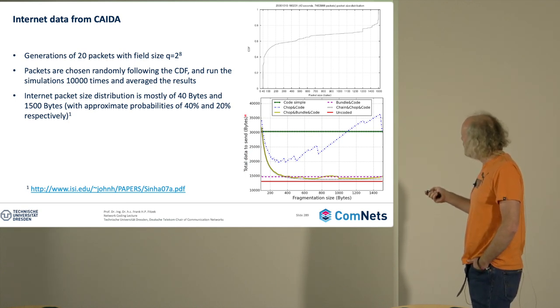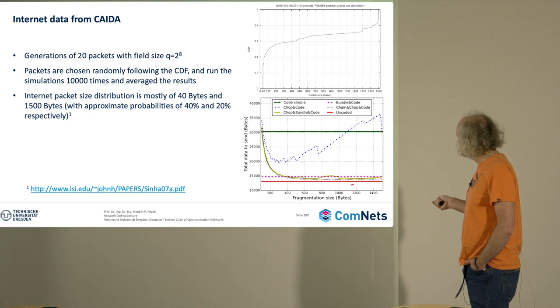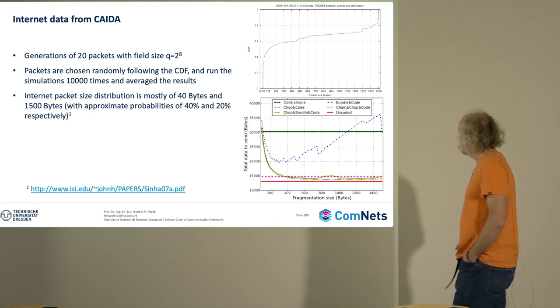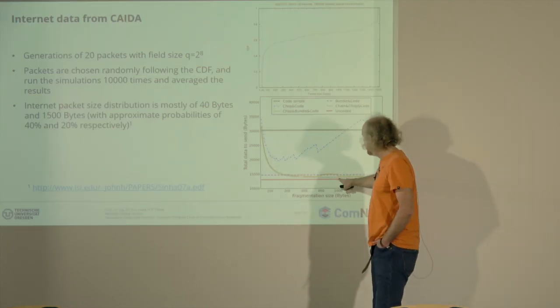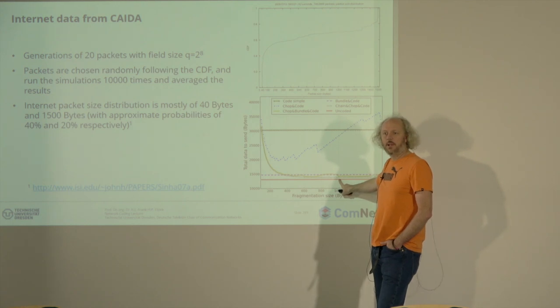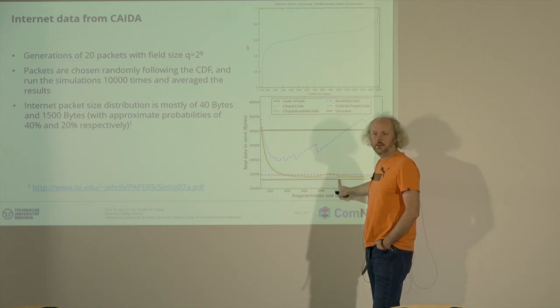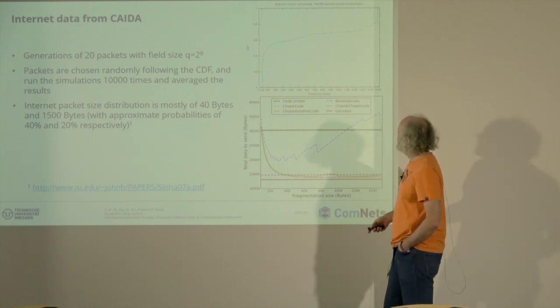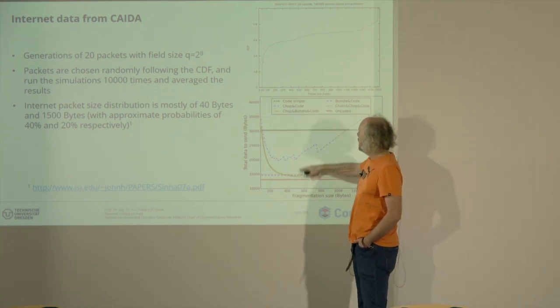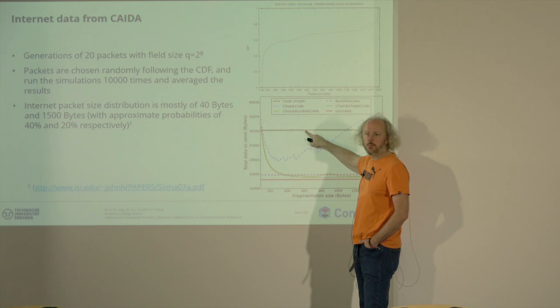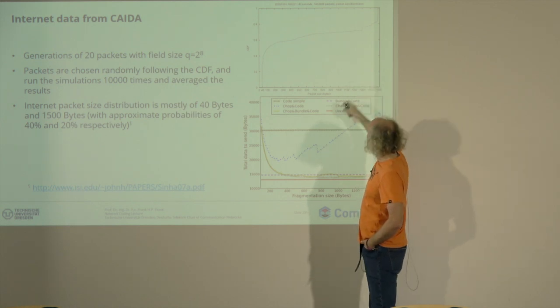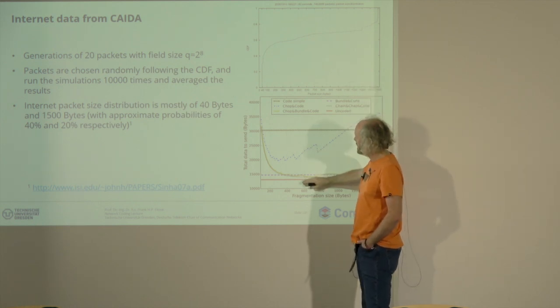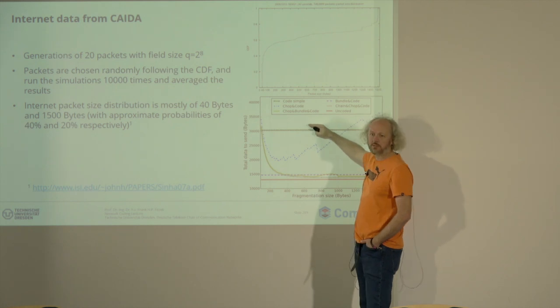This is what you would need if it's uncoded, the red one, and you can never be better than that. It's unreliable, but this is the minimum amount you would send. If you say I do the code simple and I would then go for the maximum packet size, then I would increase it from let's say 15,000 to 30,000, so there's a 3 dB penalty in doing the coding in a stupid way.